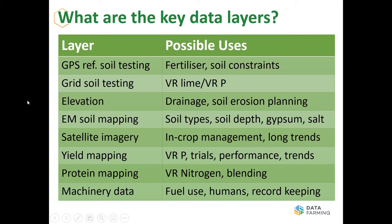Satellite imagery is really for in-crop management plus long-term trends, because we have so much data over every farm in Australia now. Yield mapping has been around forever and is good for variable rate phosphate replacement — about three kilograms per tonne of grain, you can put phosphate back on to replace what was removed, plus a little more if you want. Yield mapping also pays the bills in terms of proving return on investment — whether you're doing a nitrogen trial, deep ripping, or any other activity, you can prove your return on investment from those activities.